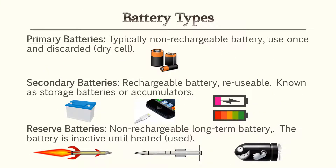There are three main battery types: primary batteries, secondary batteries, and reserve batteries. Primary batteries are typically non-rechargeable and discarded after use — like household batteries used in remote controls. Secondary batteries are rechargeable, such as those in your car or cell phone. Reserve batteries are used in weapon systems like missiles or torpedoes. They are non-rechargeable but have a long-term shelf life, and only discharge once activated.